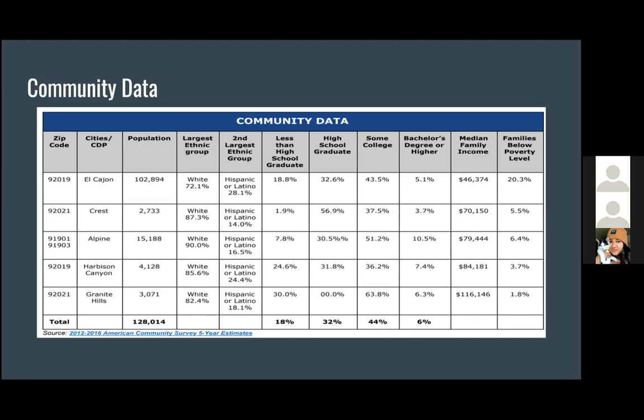There are 128,014 people in the population of El Cajon, and looking through this we see that the median income in El Cajon and Granite Hill shows a significant difference — $46,374 versus $116,146.